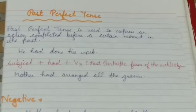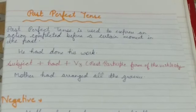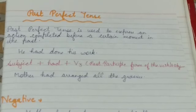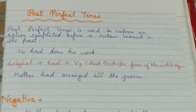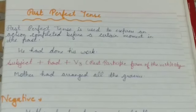Past perfect tense is used to express an action completed before a certain moment in the past. For example: 'He had done his work.' The formation is: subject plus 'had' plus third form of the verb, also called the past participle form. For example: 'Mother had arranged all the groceries.' That is the positive sentence.